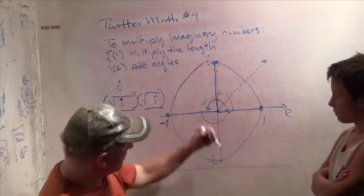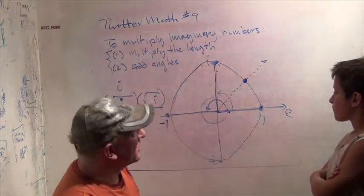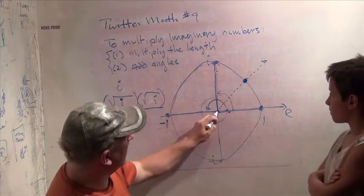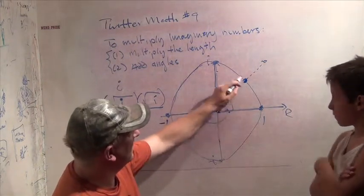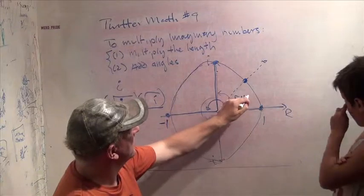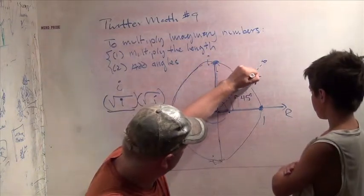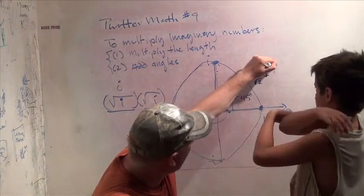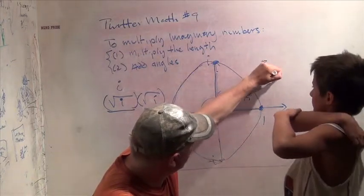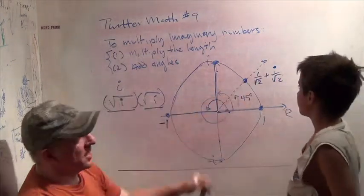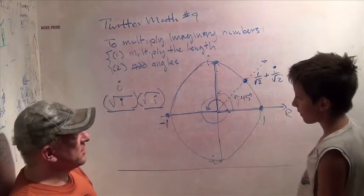And when I multiply the length, I have to get a length of 1. So what times what equals 1? 1. So I go out a distance 1. So the square root of I must live right here because it's a distance of 1 away. 1 times 1 is 1. And this is a 45 degree angle. And it turns out this is the point 1 over the square root of 2 plus I over the square root of 2.